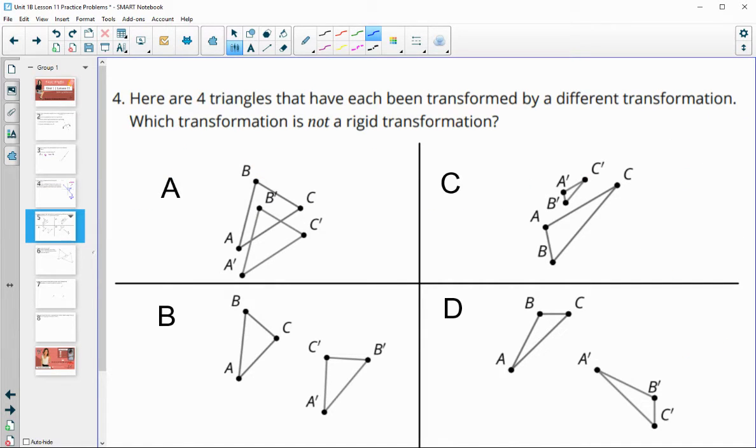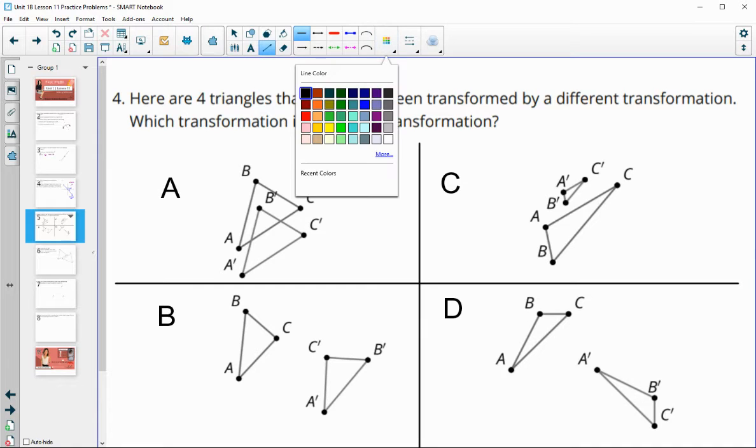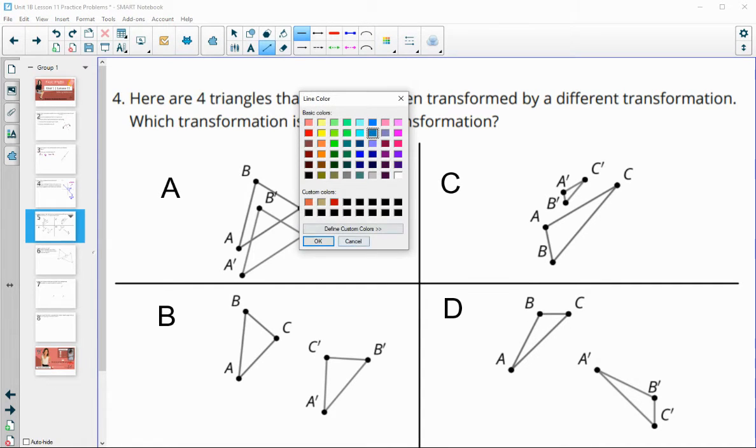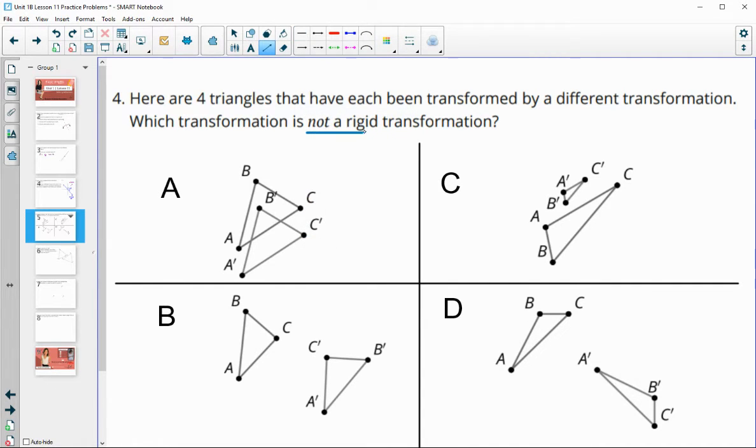Number four gives us four triangles. Each has been transformed by a different transformation. Which one of these is not a rigid transformation? Remember, rigid transformation means that they stay the same size. So we are looking for two triangles that change sizes.